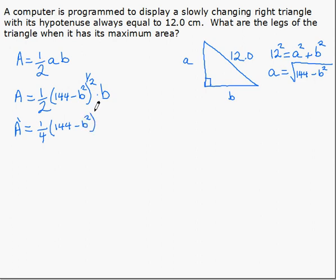to the power of negative a half, times the derivative of the inside, which is negative 2B, times B. Product rule: derivative of the first, keep the second.